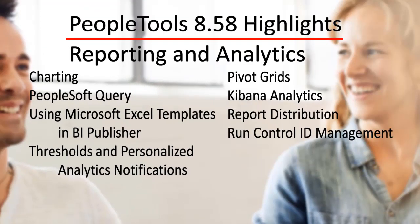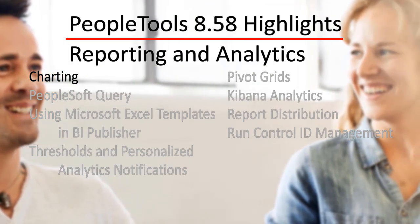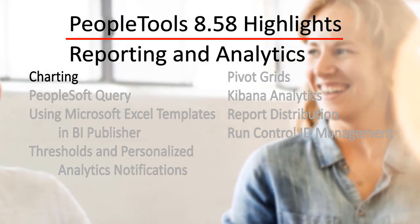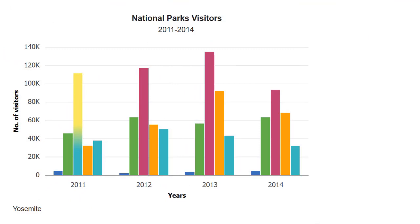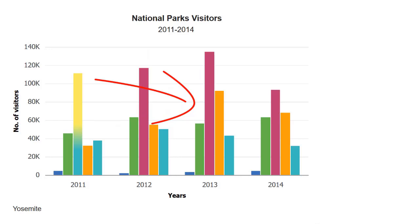PeopleTools 8.5.8 Reporting and Analytics include enhancements to Charting, PeopleSoft Query, using Microsoft Excel Templates in BI Publisher, Thresholds and Personalized Analytic Notifications, Pivot Grids, Kibana Analytics, Report Distribution, and Run Control ID Management. PeopleTools 8.5.8 enables you to set thresholds for a particular data point or multiple data points on a bar chart, providing a visual representation that identifies when the threshold is reached. For example, the color gradually changes when the number of visitors crosses the 50,000 threshold. Instead of a gradual change in color, you can also create a band or block to represent a threshold.